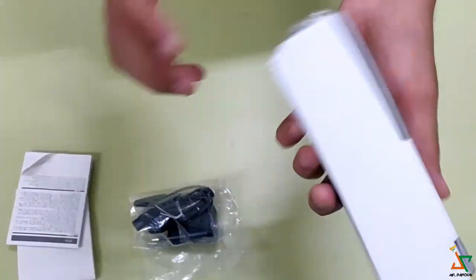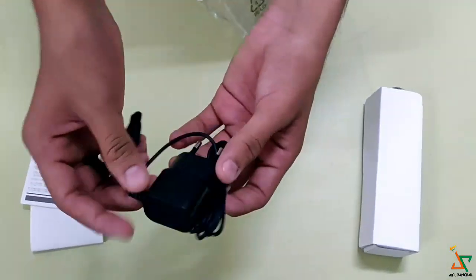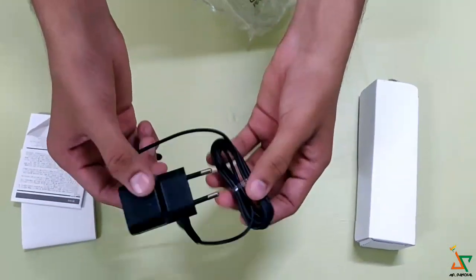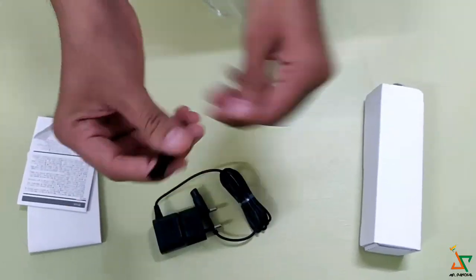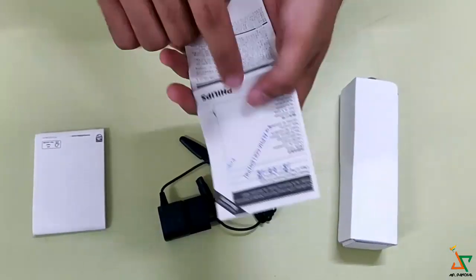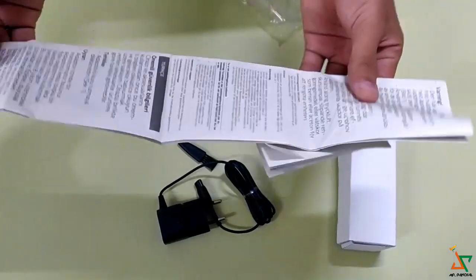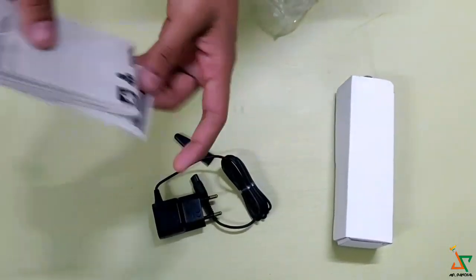Then friends this is our trimmer. First we will see there is one charger to charge the trimmer, one brush to clean the teeth of this trimmer, some manual and one guarantee card from Philips. And there is a very big manual.